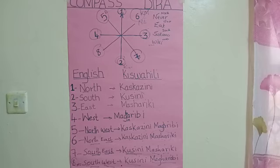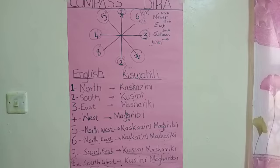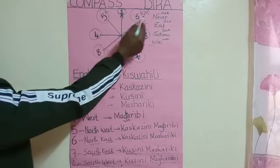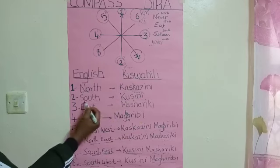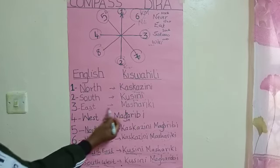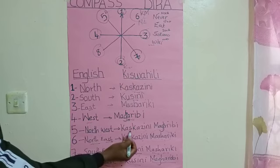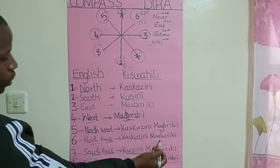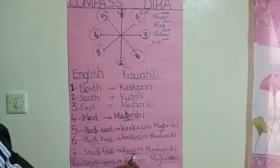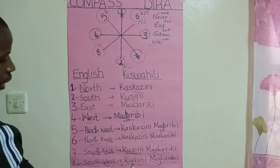From today, I believe you don't have a problem reading compass directions in both English and Kiswahili. Compass in Kiswahili: dira. Number one — north, kaskazini. South, kusini. East, mashariki. West, magaribi. Northwest, kaskazini magaribi. Northeast, kaskazini mashariki. Southeast, kusini mashariki. And southwest, kusini magharibi.